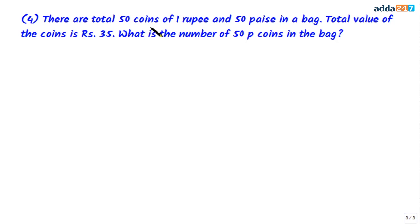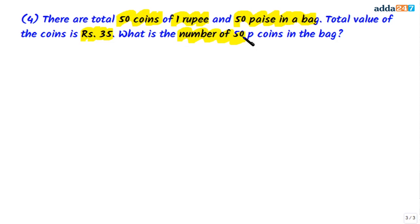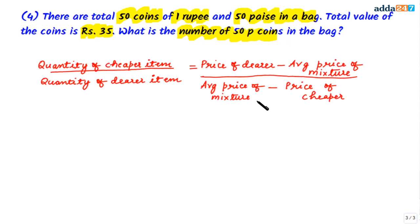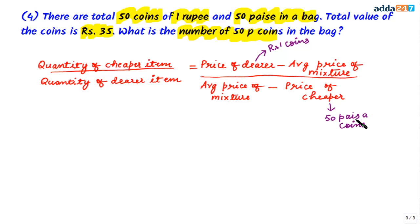Let's take question number 4. There are a total of 50 coins of 1 rupee and 50 paisa in a bag. The total value of coins in the bag is rupees 35. We need to find the number of 50 paisa coins. Using the allegation formula: the dearer item will be rupee 1 coins, the cheaper item will be 50 paisa coins, and rupees 35 will act as the average price of the mixture.